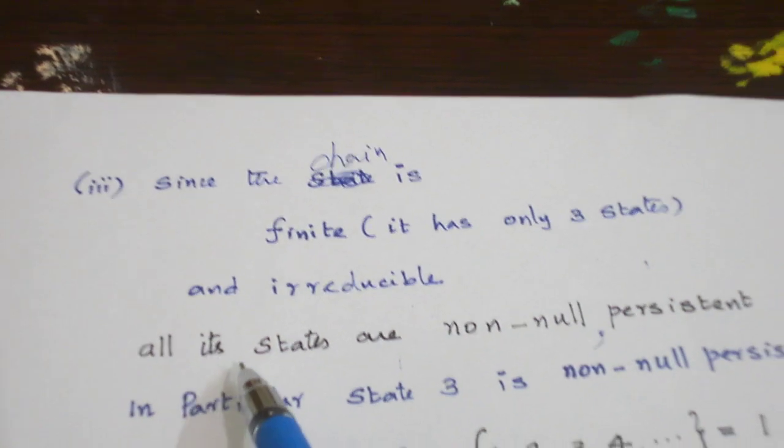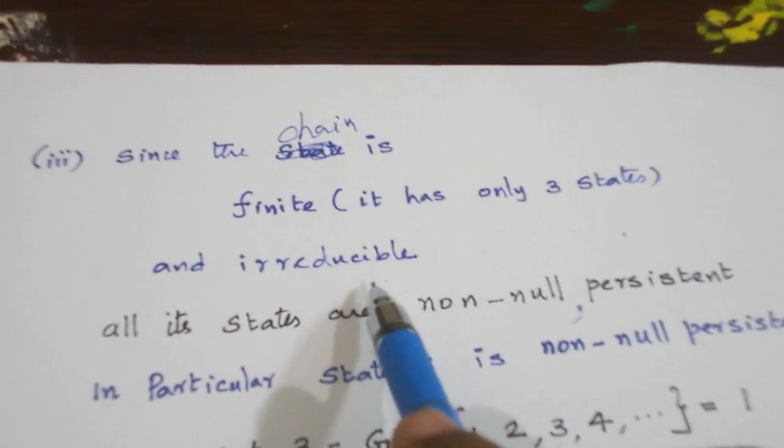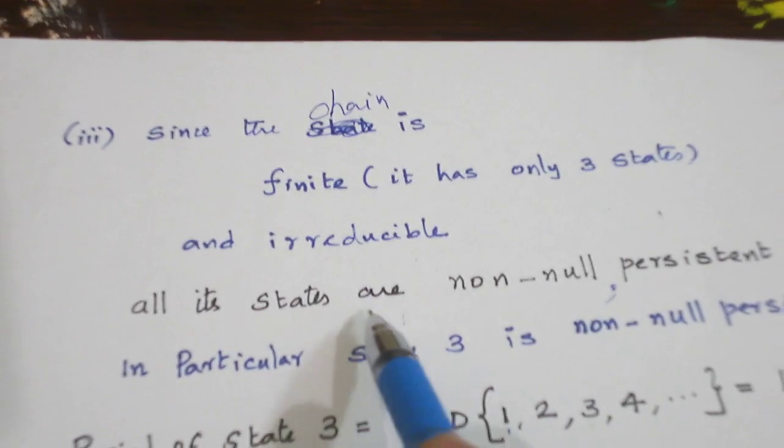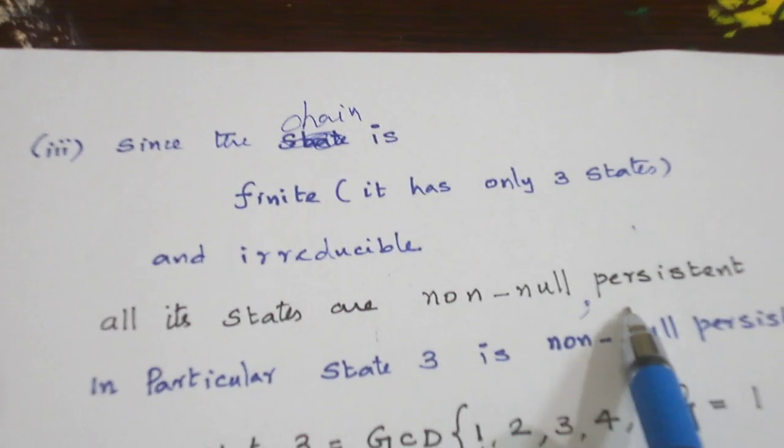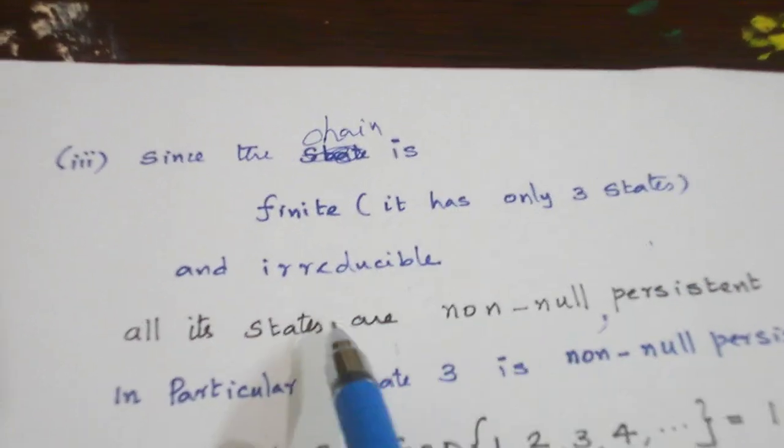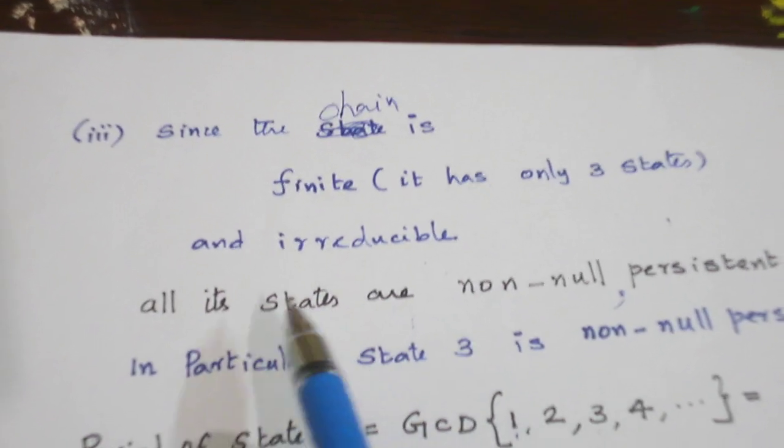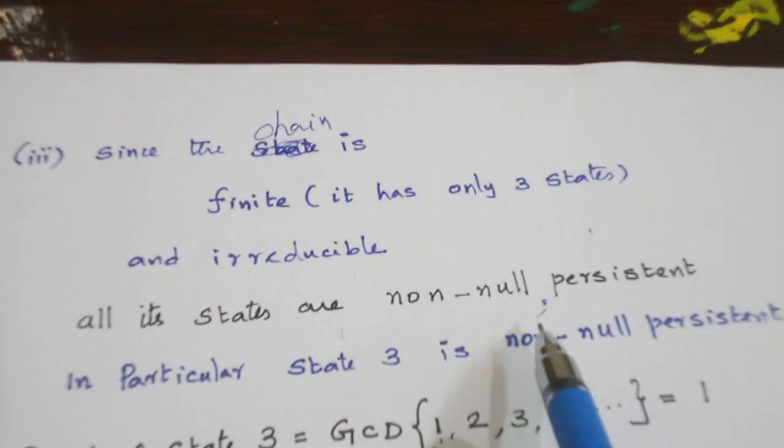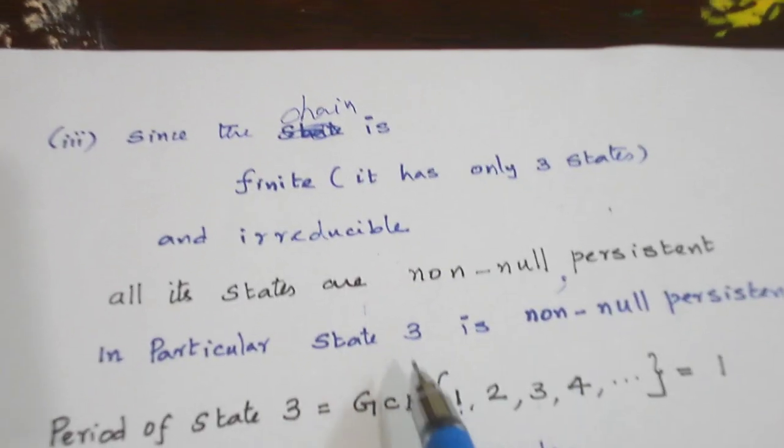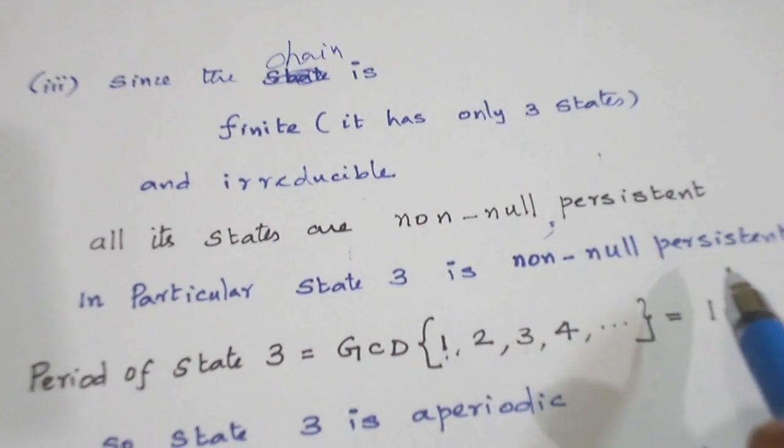If a chain is finite and irreducible, all its states are non-null and persistent. So let us make use of that theorem and we conclude all the states are non-null and persistent. In particular, state 3 is non-null and persistent.